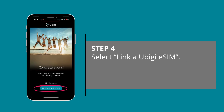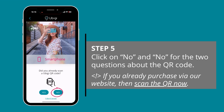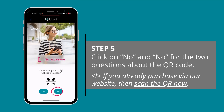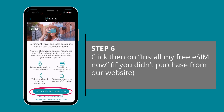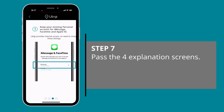Select Link to Ubiji eSIM, then choose Smartphone. Click on No and No for the two questions about the QR code, then click on Install My Free eSIM Now. Skip the four explanation screens.